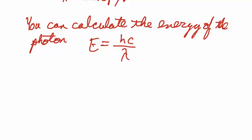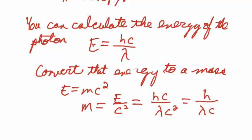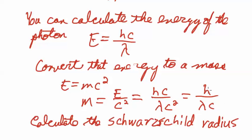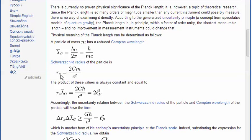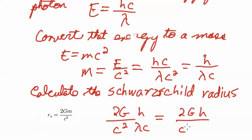And convert that energy to a mass using e equals mc squared. So that mass would be equal to that energy hc over lambda divided by c squared, which would be h over lambda c. Then we want to calculate the Schwarzschild radius of that mass, which is this: r_Schwarzschild is 2Gm over c squared. And this is the radius where that mass would become a black hole, which would represent the surface of the black hole. So we're going to take that 2G over c squared and plug in that h over lambda c, and get 2Gh over c cubed lambda equals the Schwarzschild radius of the thing.